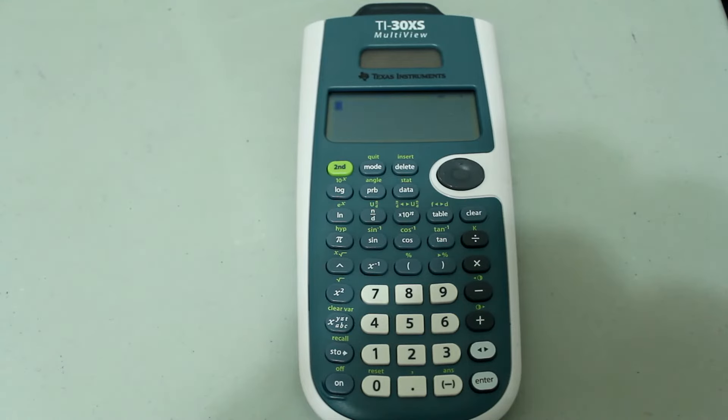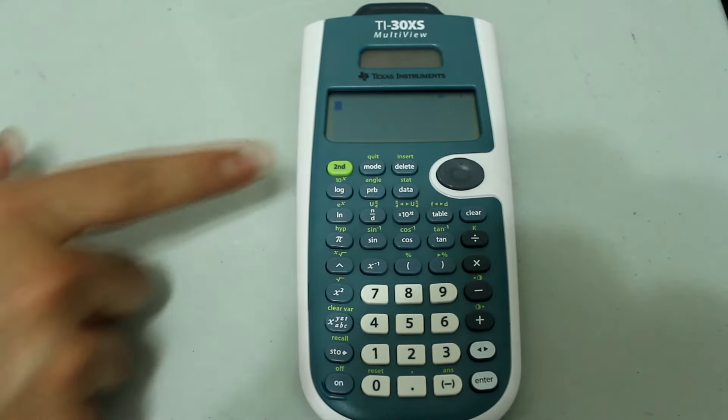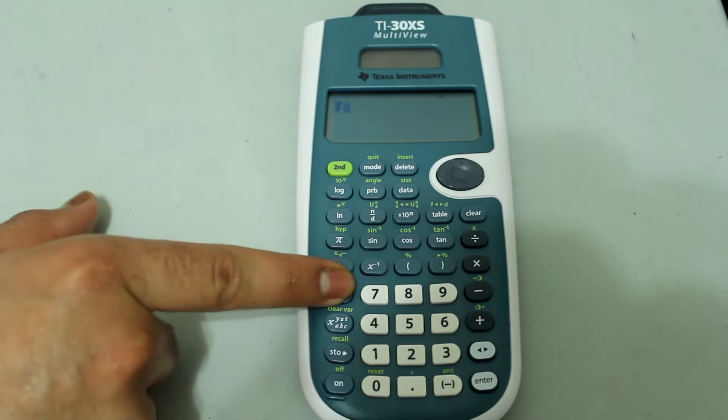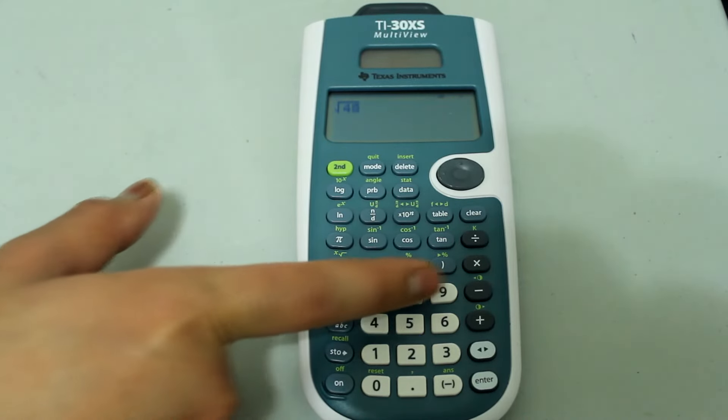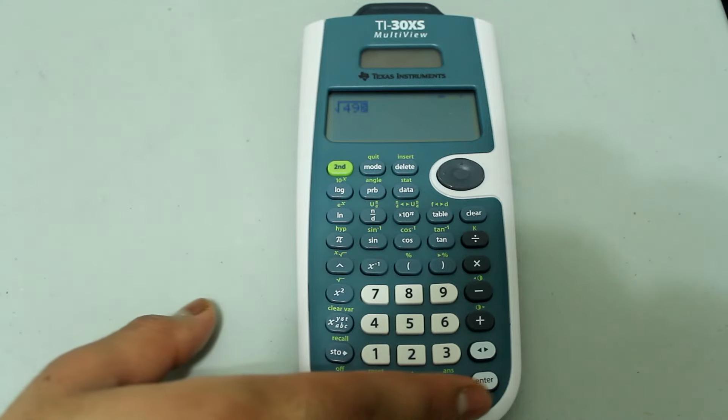Finding the square root of a perfect square is quite simple. Just press 2nd and the x2 button and then type in the number. And press enter.